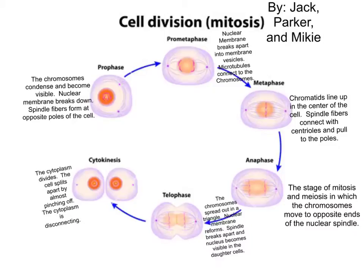In prophase, the chromosomes condense and become visible. The nuclear membrane breaks down and spindle fibers form at opposite ends of the poles.